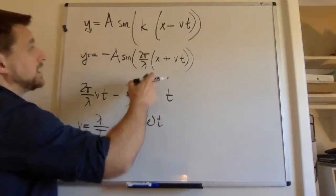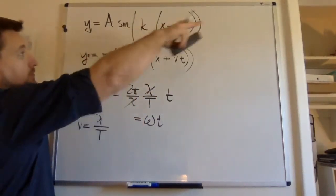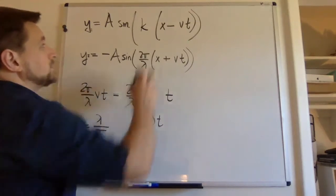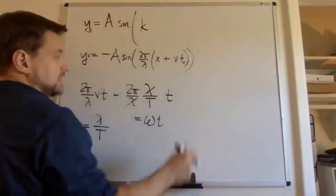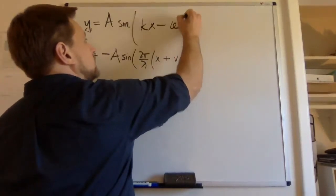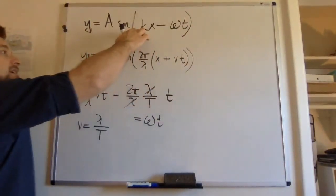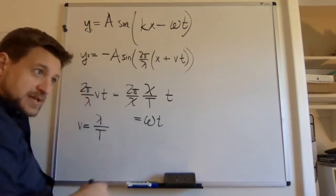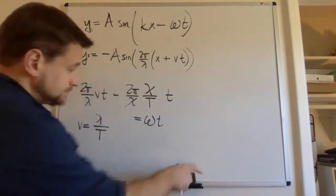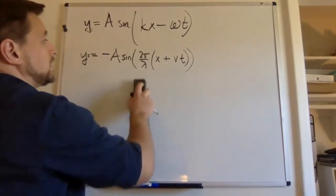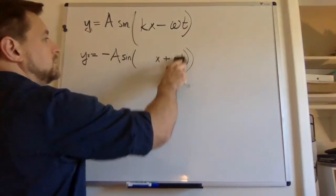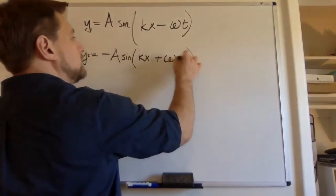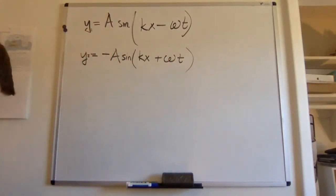So the second term, all right. So we distribute 2π over λ through the minus, through the parentheses. That v in the front gets us ω. So I'm going to rewrite this as kx minus ωt. k in this case isn't a spring constant. It's the spatial radian frequency. It's the wave number. So we'll make that same change here. A sine(kx + ωt). Okay.